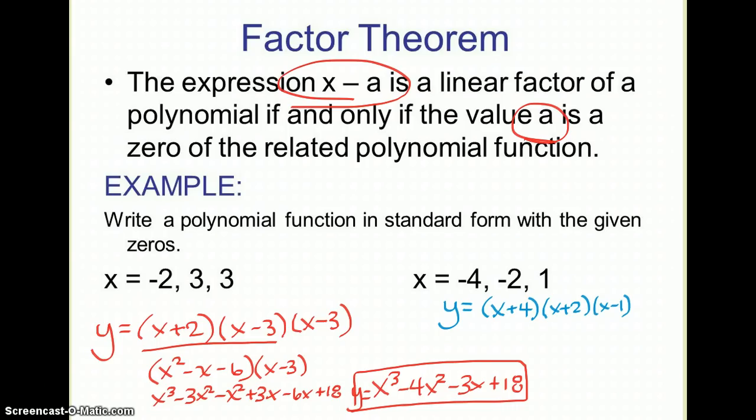So I do my FOIL, x squared plus, that's going to end up being a six x total, plus eight, and then times x minus one. So when I go to multiply this out, I'm distributing x squared times x and x squared times negative one. And I just repeat that for all of my numbers there. So x squared times x is x cubed. x squared times negative one is minus x squared.